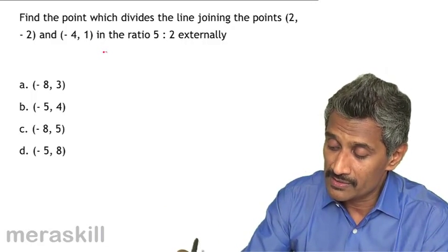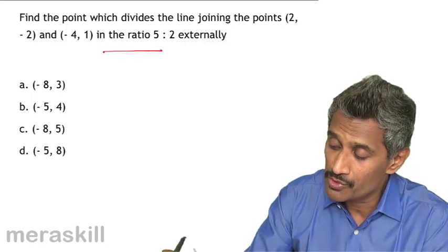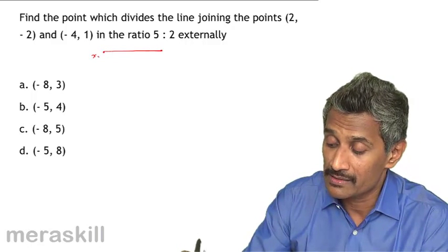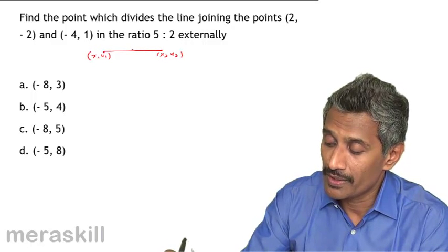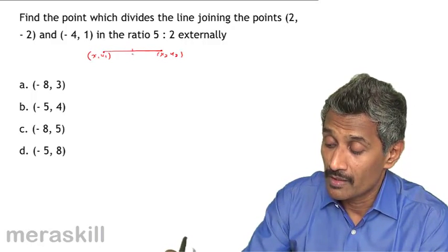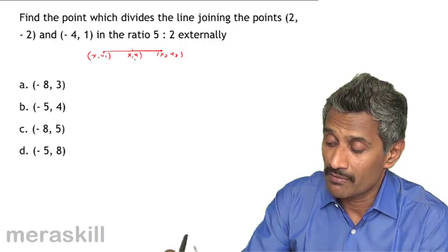Now, let's just quickly recapture. Suppose you have a point A, (x1, y1) and (x2, y2), and there is a point here P whose coordinates are (x, y).